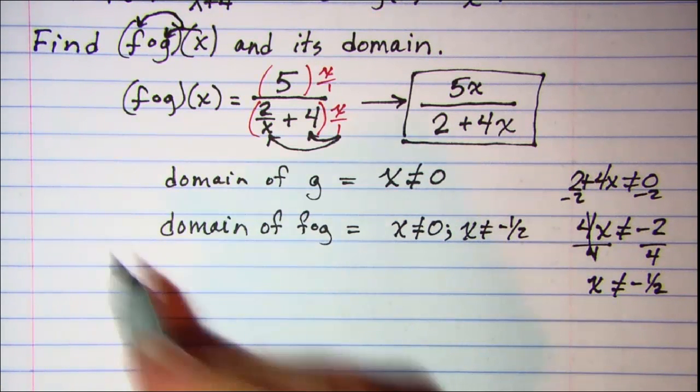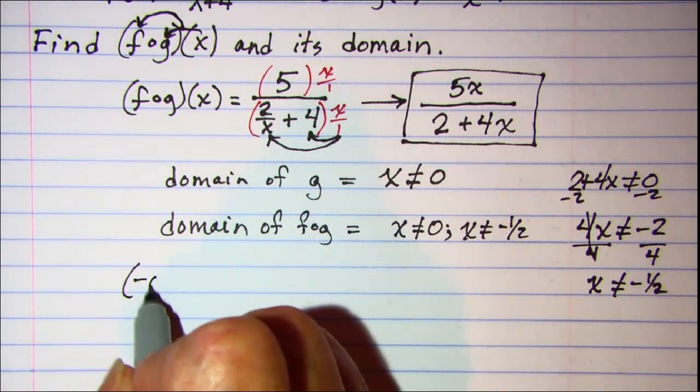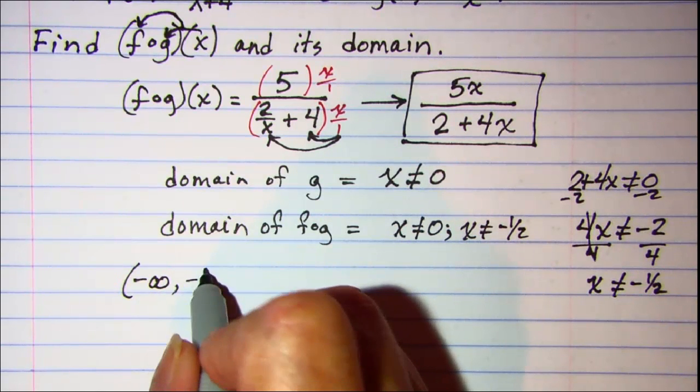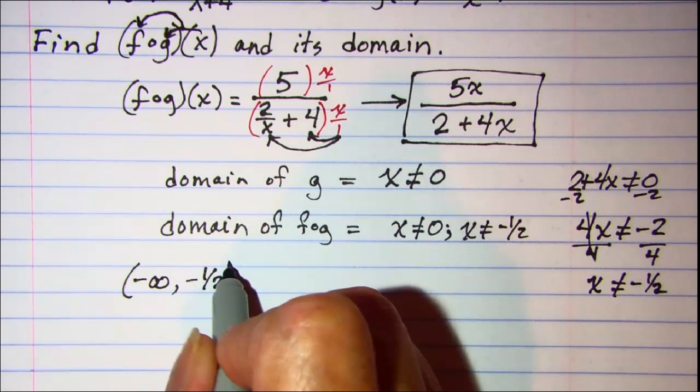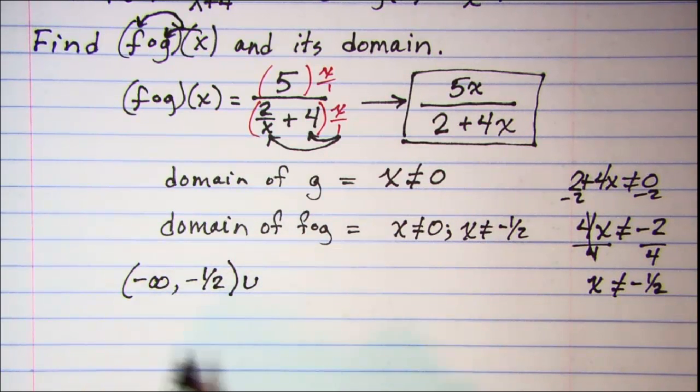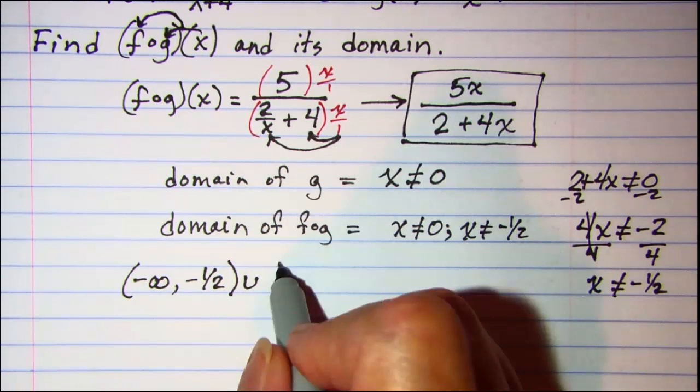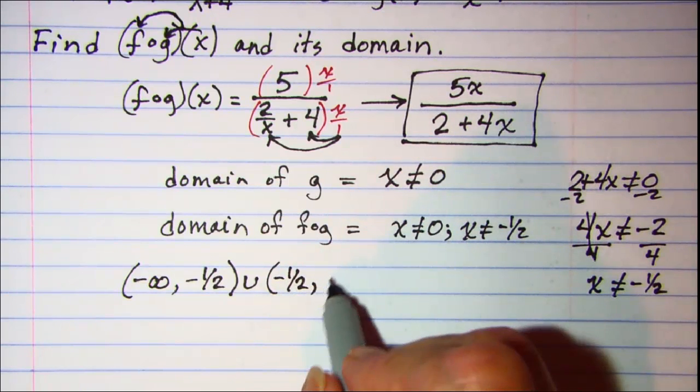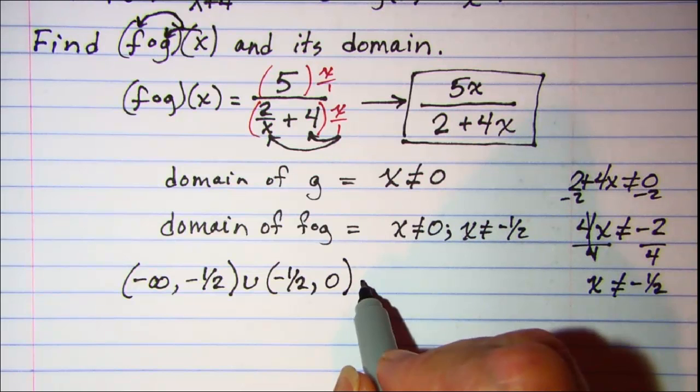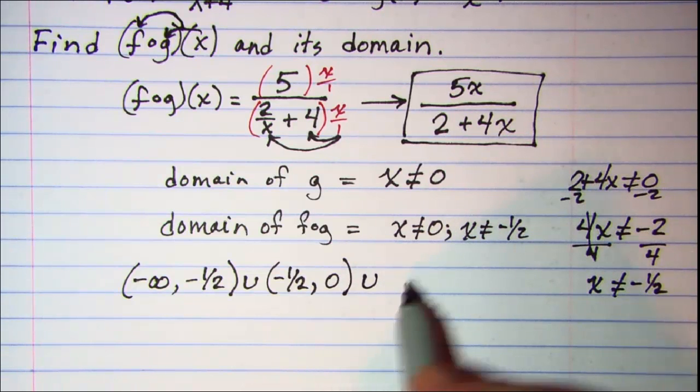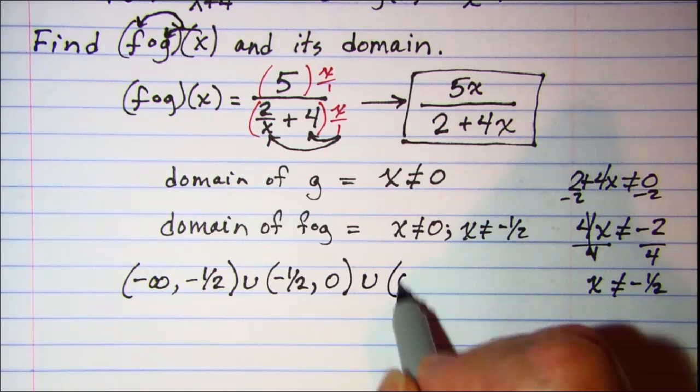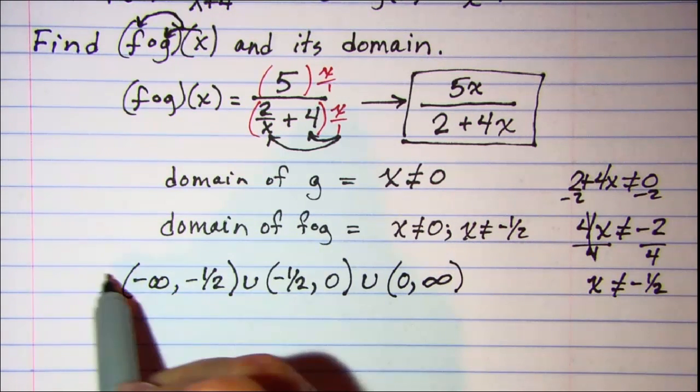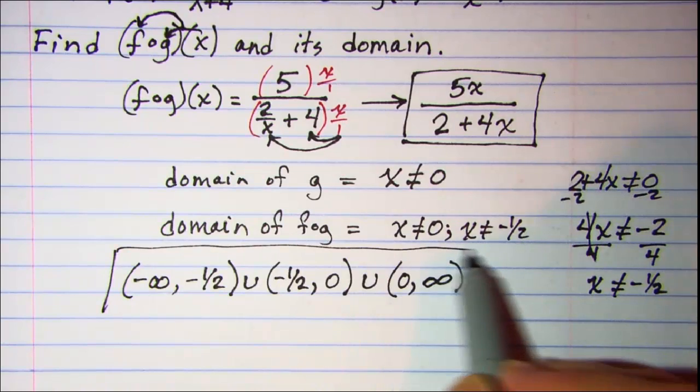Let's write those in interval notation. I'll do all negative numbers up to negative 1/2 but not including that, and then we'll pick up on the other side of negative 1/2 and do all numbers up to 0, and then pick up on the other side of 0 and do all numbers up to positive infinity. This is our domain.